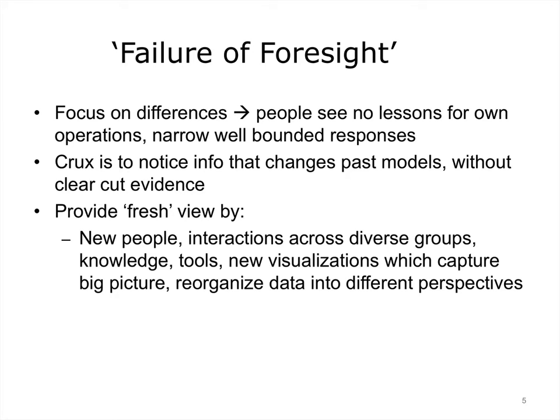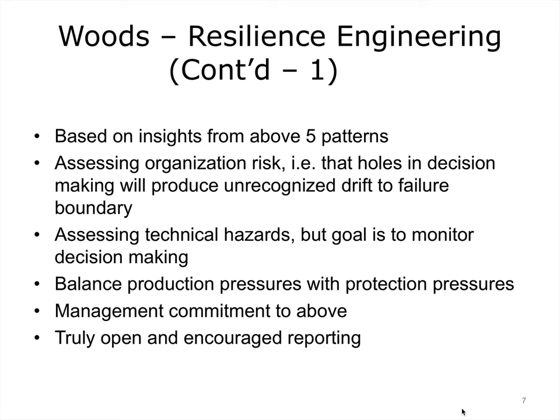Most complex processes may not initially have clear-cut evidence that a dangerous situation is emerging, so people must notice information that changes their models. New people, interactions, knowledge, tools, and visualizations which capture the big picture and allow reorganization of data into different perspectives can all assist in formulating a truer picture. Woods and others recommend building processes in which people cross-check each other's work and using different methods which can serve as cross-checks and detect possible abnormalities.